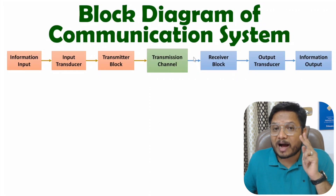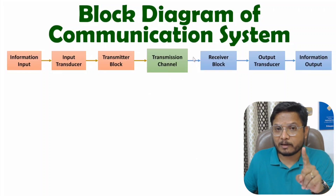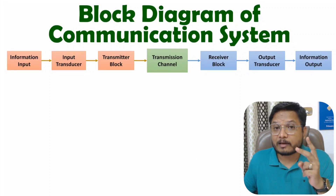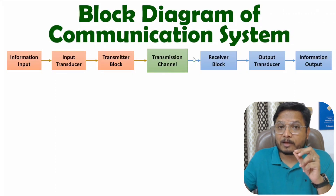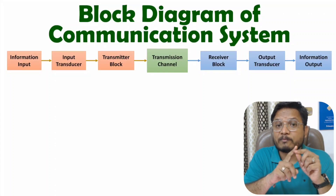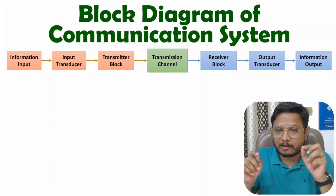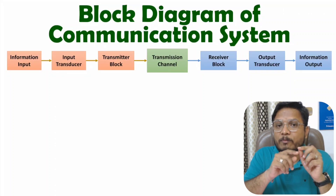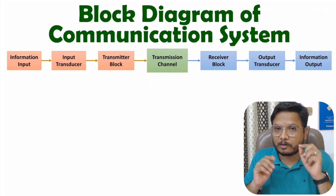If you have a wired transmission channel, there can be two categories: optical channel or electrical channel. If we have an optical channel, we use an optical cable to transmit information from sender to receiver. If we have an electrical channel, we use an electrical cable to transmit information from sender to receiver.